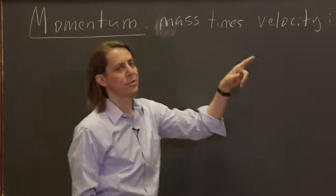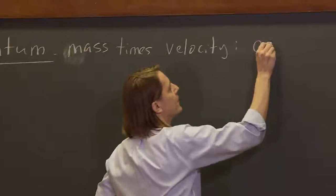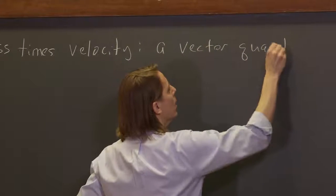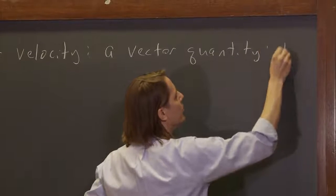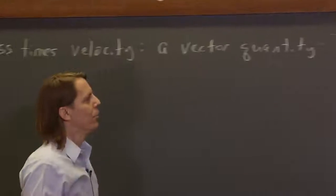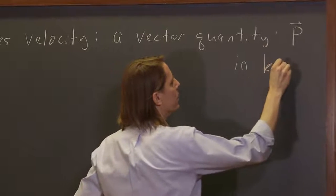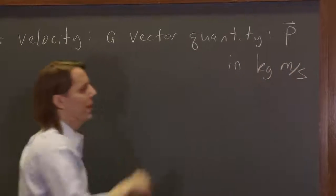When you multiply scalar times a vector, you get a vector. So it's a vector quantity, which we represent with a small p for momentum. And the unit is kilogram meters per second, mass times velocity.